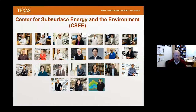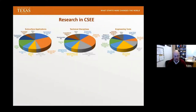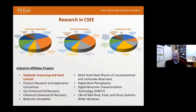We are a center in the Cockrell School at the University of Texas at Austin. We have 24 faculty and PIs, in addition to many research associates and graduate students who do research in the area of subsurface energy. Our research is a combination of subsurface applications, technical disciplines, and engineering tools. We work on oil and gas as well as other subsurface applications. Our technical disciplines cover traditional petroleum engineering disciplines like reservoir production, drilling, engineering, and formation evaluation, but also include things like data analytics, rock mechanics, and computational sciences. We collaborate with industry through our industrial affiliates projects. Our IAPs are listed here — I've highlighted hydraulic fracturing and sand control because our speaker today, Mukul Sharma, is the leader of that IAP.